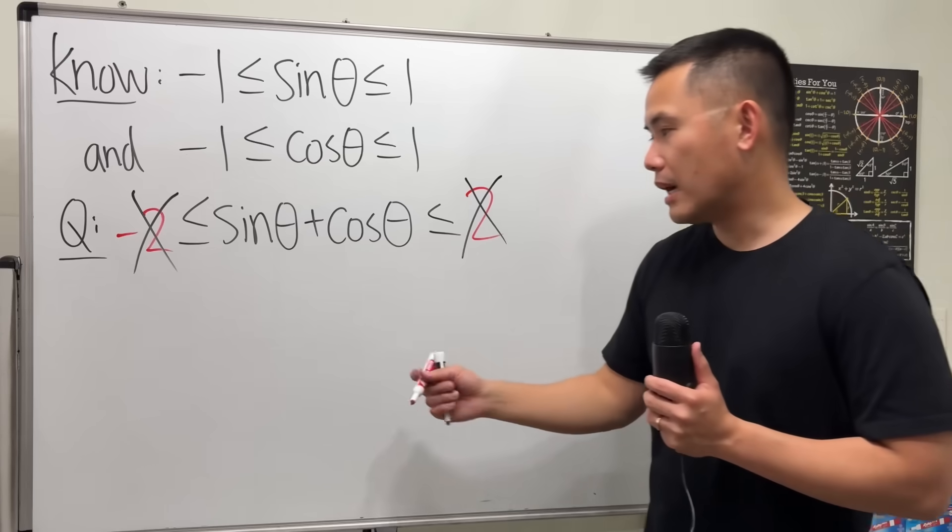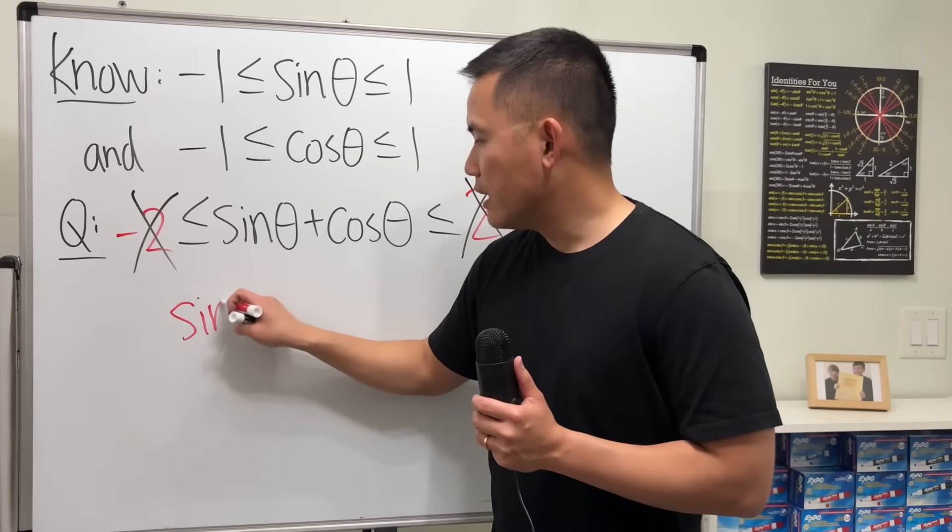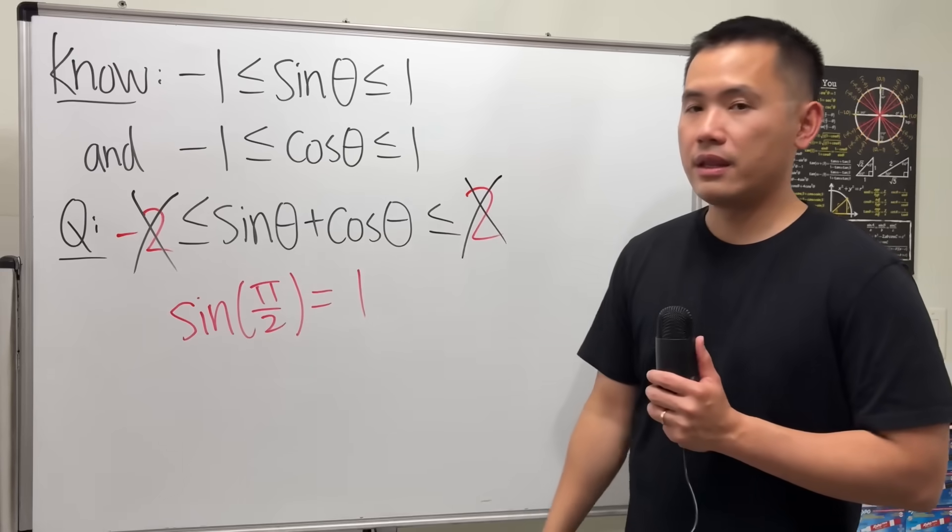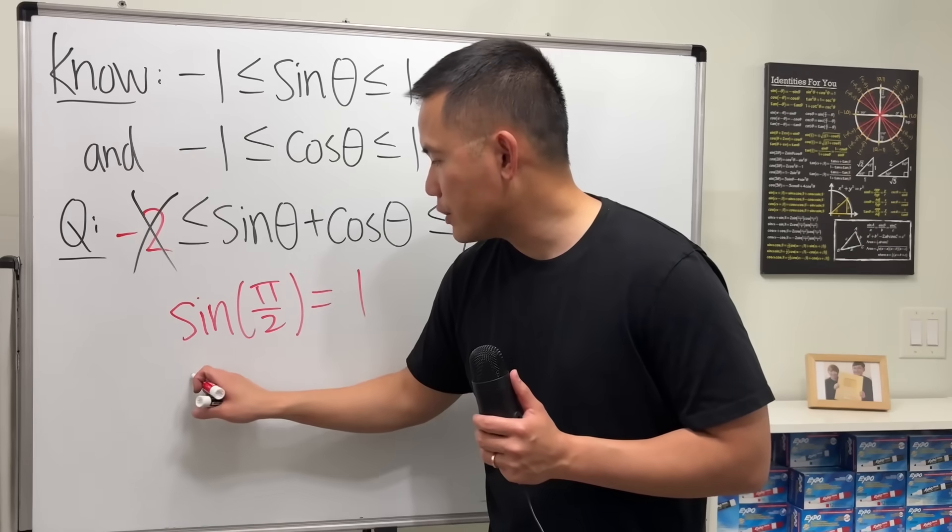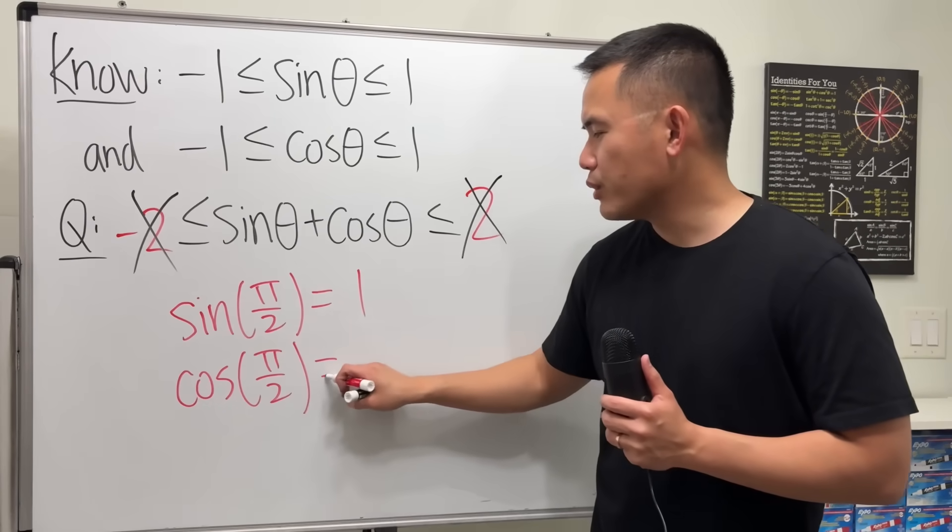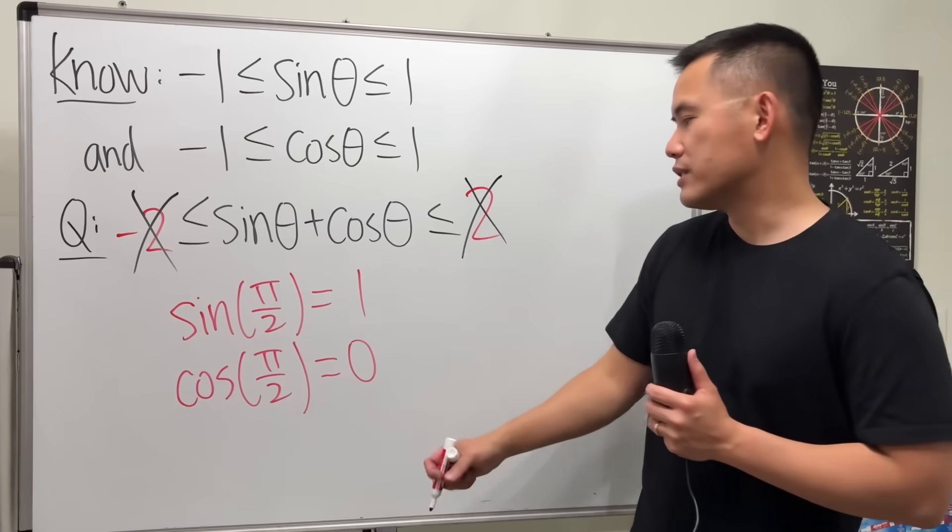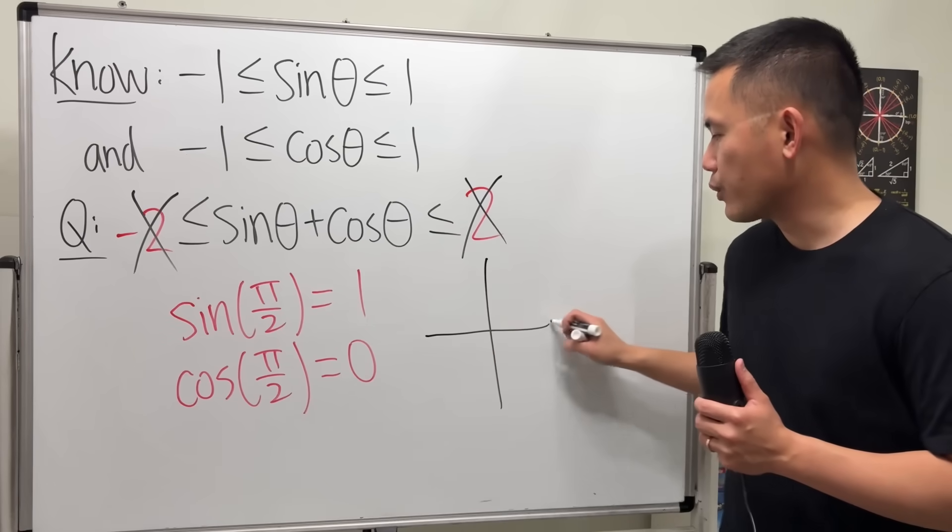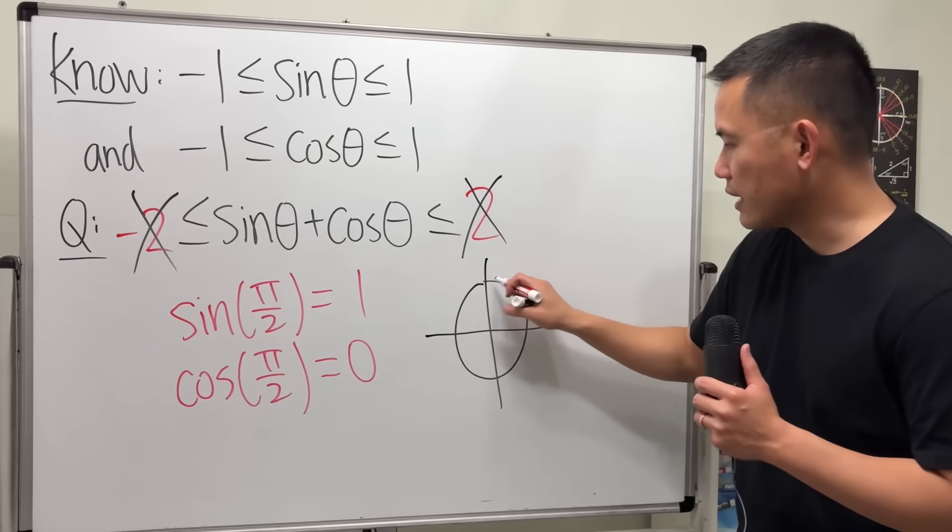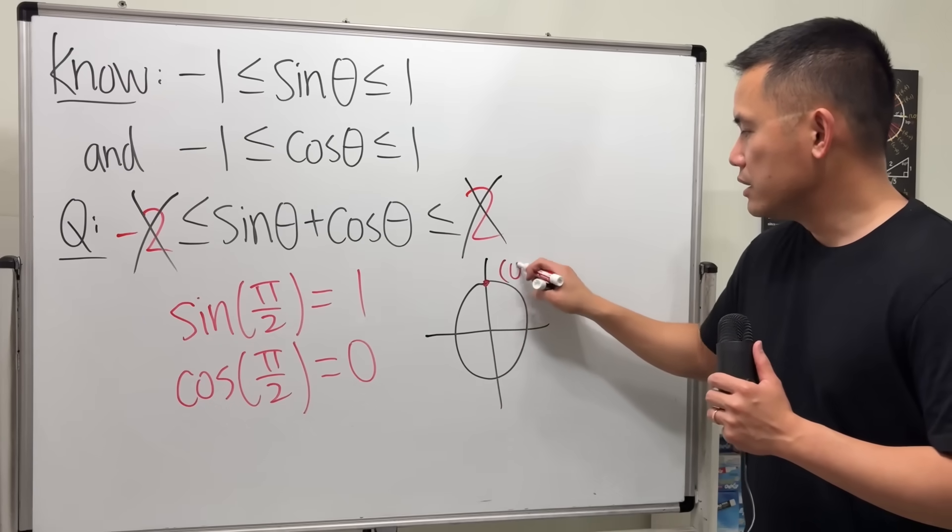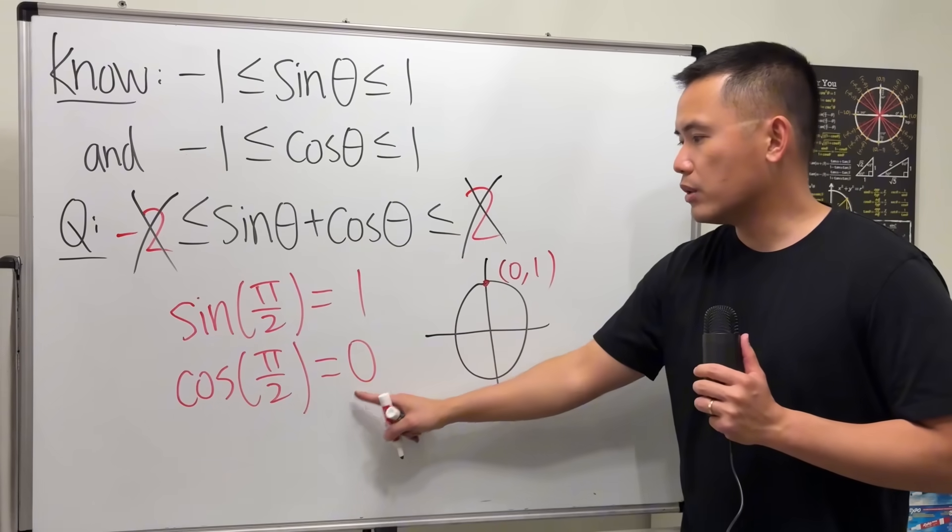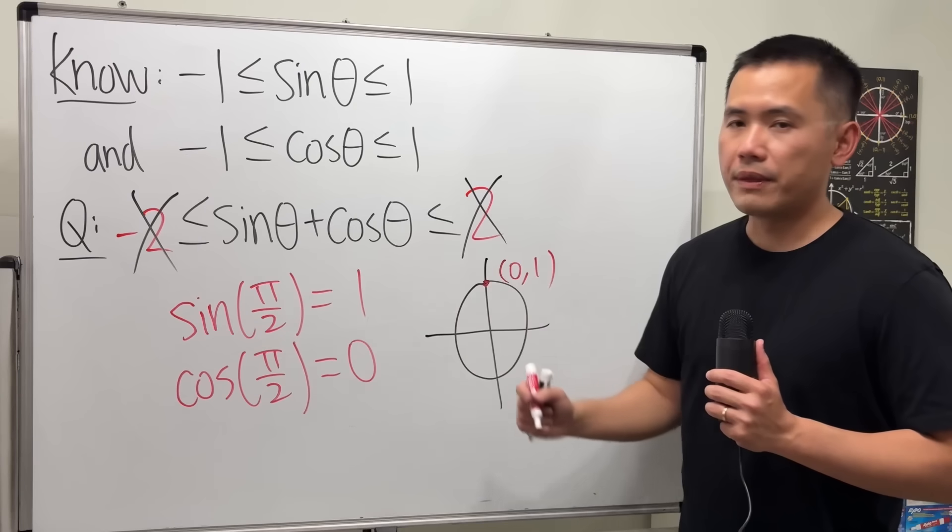Have a look. Sine, let's say pi over 2, this right here will give us 1. But if you plug in pi over 2 into cosine, that's actually going to give us 0. And the reason is because, just look at the unit circle real quick. Pi over 2 is 90 degrees, which is right here. This coordinate is 0 comma 1. Cosine is the x value, which will have 0. Sine is the y value, which is 1.